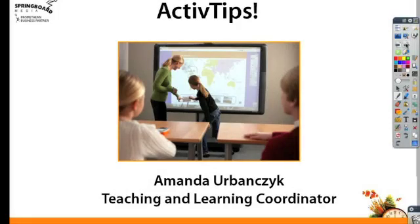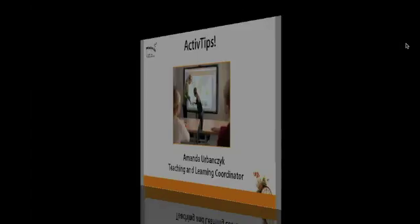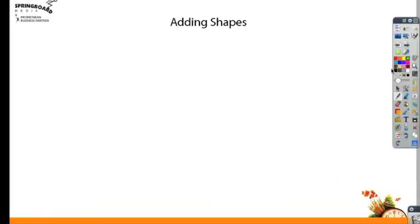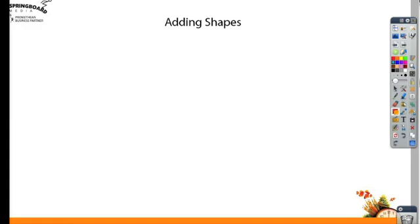Hello and welcome to Springboard Media's Active Tips. Today we're going to be taking a look at adding shapes to your flip chart. This tool right here in your toolbar is your shape tool. When you click on it, you can see a whole line of shapes shows up, and there's even an arrow at the bottom which will allow you to use other shapes.